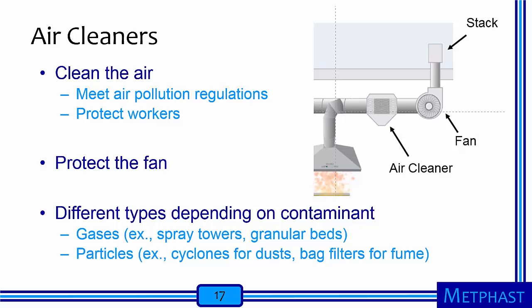Air cleaners serve to clean the air. How well they clean the air depends on the purpose — if the air is being exhausted outside, they need to meet air pollution regulations. Alternatively, they need to be effective enough to protect workers if the air is recirculated back into the facility. Air cleaners also serve to protect the fan, as some gases are highly corrosive and some particles can erode the fan blades. There are many different types of air cleaners depending on the contaminant being cleaned. Spray towers are used to absorb gases, granular beds can also be used to absorb gases, and cyclones and bag filters are common air cleaners for particles.